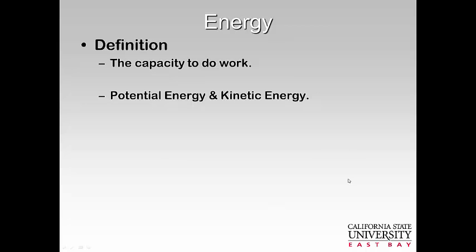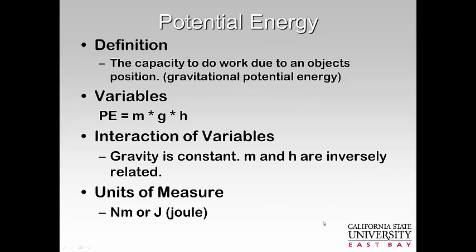You have potential and kinetic energy, which you may remember from physics. Potential energy is the capacity to do work based on the object's position — gravitational potential energy. Potential energy (PE) equals mass times gravity times height. The higher you are, the greater potential energy you have. Gravity is constant, and mass and height are inversely related. The units of measure are Newton meters, or a joule.